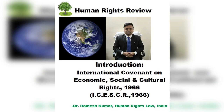Now we are going to discuss something about the brief aspects relating to general provisions, which have been placed under Articles 1 to 5 of this covenant. The general provisions of this international instrument are contained in Part 1 and Part 2. Article 1 is related to the right of self-determination, responsibilities of the state parties, and other connected things. Article 2 is in respect of the undertaking of state parties for the realization of the recognized rights under this covenant.